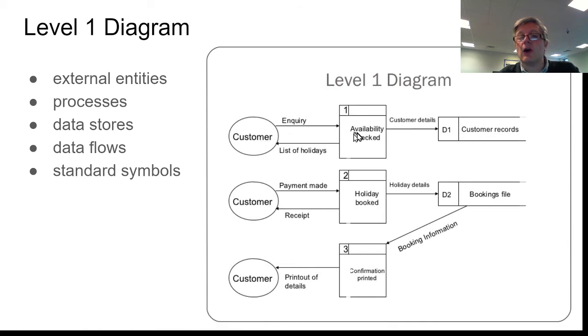While that is going on, the customer's details are being checked against the customer records and stored in the data store there. On the second part, we can see this person's now decided what holiday he or she wants to go on. They've made the payment. The holiday has been booked, so that's the process. The information about the holiday has been saved into a bookings file on a second data store. A receipt has been generated as part of the process and sent to the customer going back along this arrow.